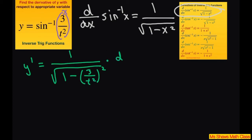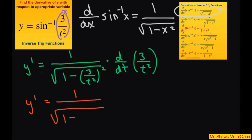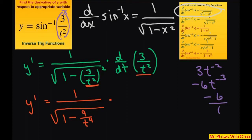You also have to differentiate with respect to t the inner function, which is 3 divided by t squared. So we get y prime equals 1 over the square root of 1 minus 9 divided by t to the fourth. Now let's differentiate the inner function: 3t to the negative 2 differentiates to negative 6t to the negative 3, which is negative 6 divided by t cubed.